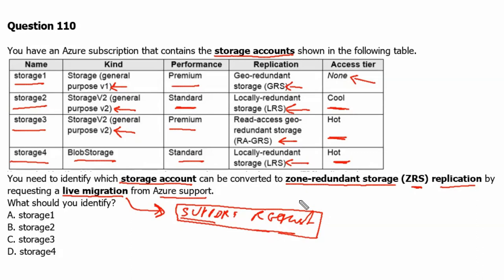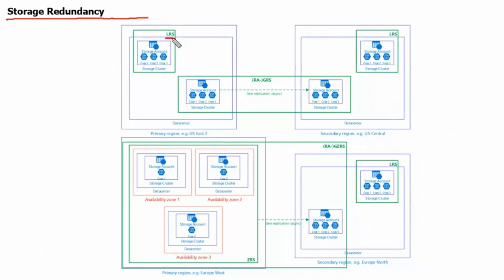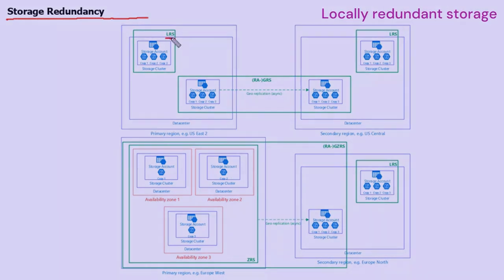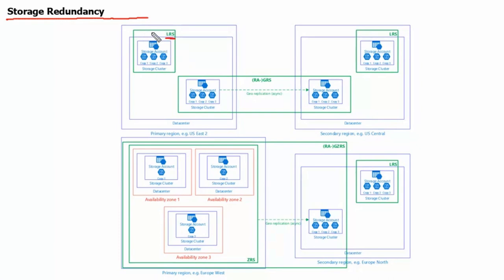Before that, let's understand the replication options available for the storage accounts. The first option is LRS, or locally redundant storage. LRS replicates the storage account three times within a single data center in the primary region. This box denotes our data center, and it has three copies — copy 1, copy 2, and copy 3 — in a storage cluster.